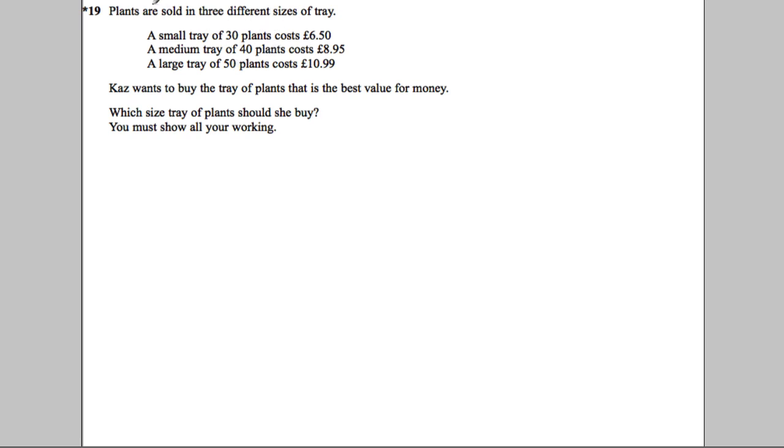Plants are sold in three different sizes of trays: a small tray, 30 plants cost £6.50; a medium tray, 40 plants cost the following; and a large tray, 50 plants cost the following. Kaz wants to buy a tray of plants for best value of money. Which tray of plants should you buy? You must show all your working.